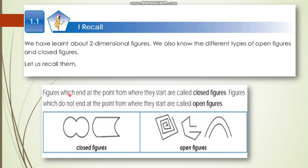So what are closed figures? Figures which end at the point from where they start. For example, if I start from this point, it goes around and ends at the same point where I started - so these are examples of closed figures. And look at this other picture - I start from this point, draw, and it ends at another point, not the same point. So these types of figures are open figures.